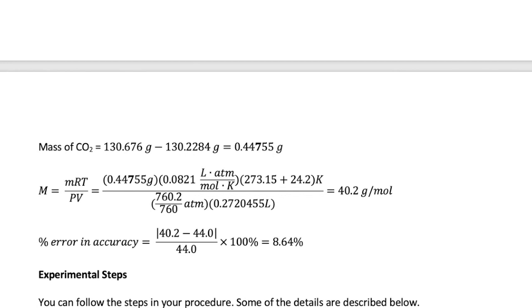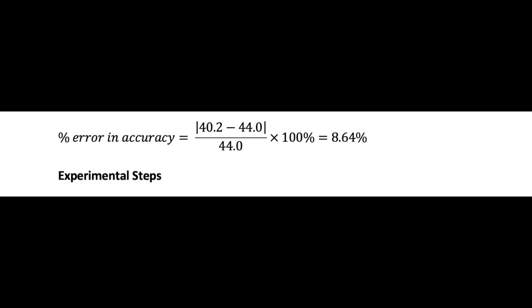Now we can put all the numbers together in our equation, keeping in mind that the significant figure in this case is limited to 3 based on the operations we have performed in the earlier steps. So in the end, that gives us a molar mass of 40.2 grams per mole. We can now calculate the percent error in accuracy by comparing our number with a theoretical molar mass of 44.0 and getting an 8.64 percent error. In the next video, I will discuss the experimental details of this lab.